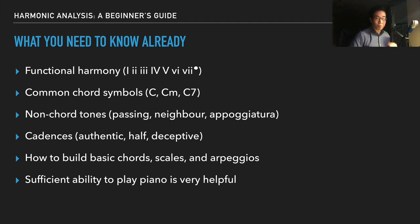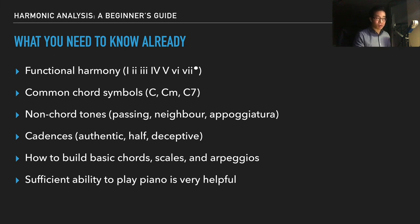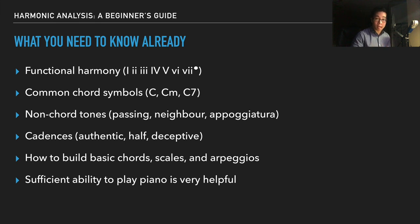The root quality chord symbol uses the root note — for example, a C by itself implies C major. A lowercase 'm' means minor, so Cm means C minor. Then C7 or C6 implies a note added beyond the original triad. C7 is a dominant seventh; C6 means a C major chord with the sixth note added. You should know basic major, minor, dominant seventh, and even diminished seventh chord symbols.